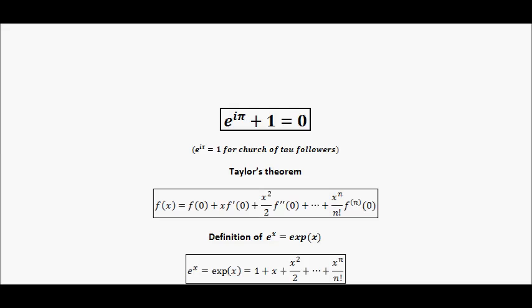I'm going to prove Euler's identity, which relates the exponential function e, i (the square root of negative 1), pi, and 1 — unity. So, e to the i pi plus 1 is 0. I'm at the very least going to try and justify why this is.